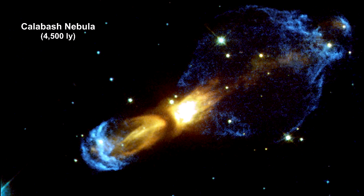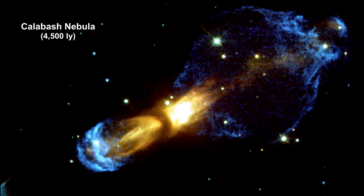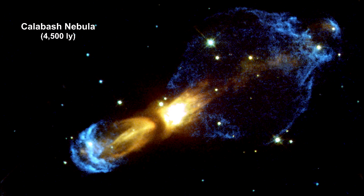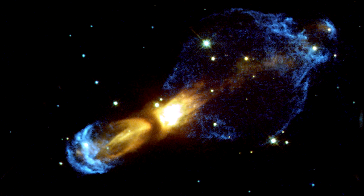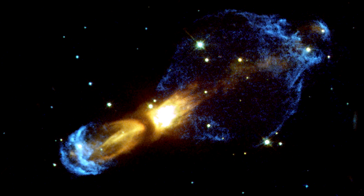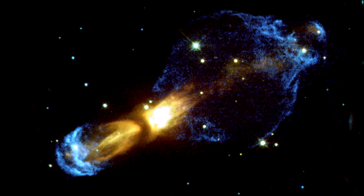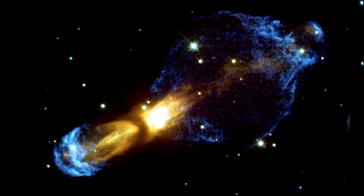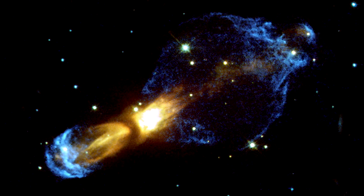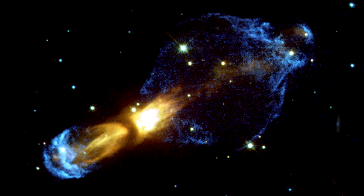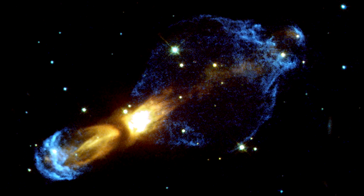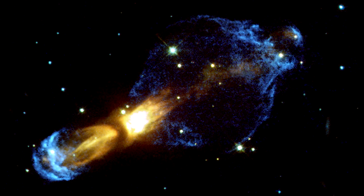This new detailed Hubble image shows a planetary nebula in the making — a proto-planetary nebula. The dying star, hidden behind dust and gas in the center of the nebula, has ejected massive amounts of gas. Parts of the gas have reached tremendous velocities of up to 1.5 million kilometers per hour — that's 932,000 miles per hour.